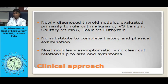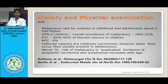Regarding history and physical examination: age is an important factor. The malignancy rate for nodules in childhood and adolescence is about two-fold higher. Solitary thyroid nodules in children have an overall prevalence of malignancy of about 18 to 21%. Most are papillary thyroid cancer; in children we can also see familial medullary thyroid carcinoma, which is part of multiple endocrine neoplasia type 2. At the other end of the spectrum, in geriatric patients above 70 years, the risk of malignancy is quadrupled.